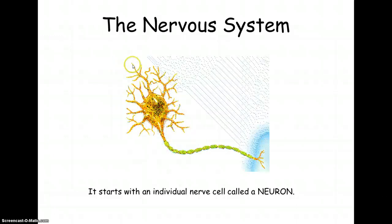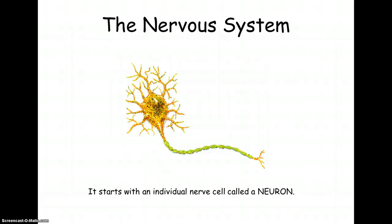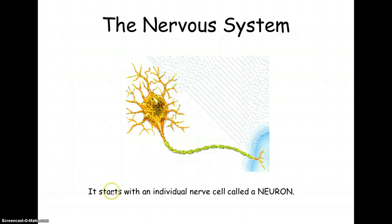Over here we have the dendrites and they're receiving messages from another neuron. When that message gets to a dendrite, the message then goes to the cell body, information goes to the nucleus, and then that message is fired through the axon into the axon terminals and that message would go to another neuron across the synapse.